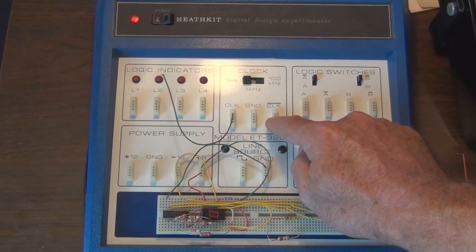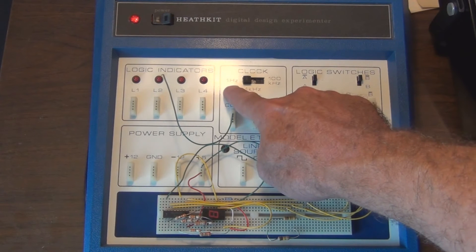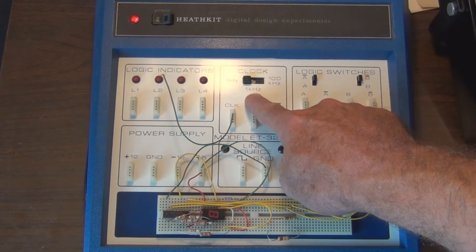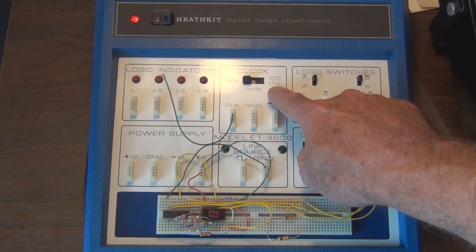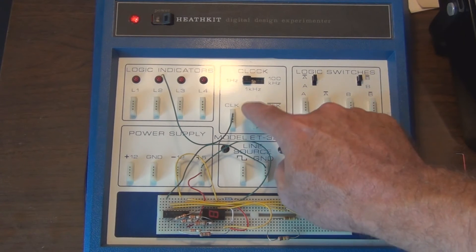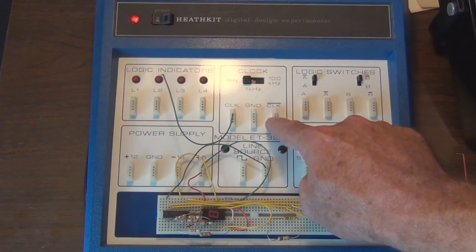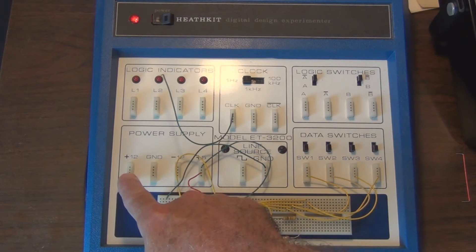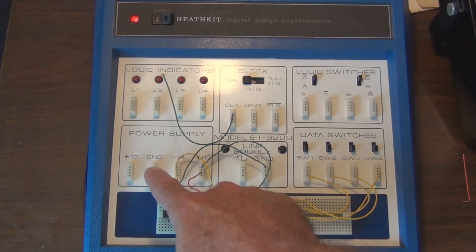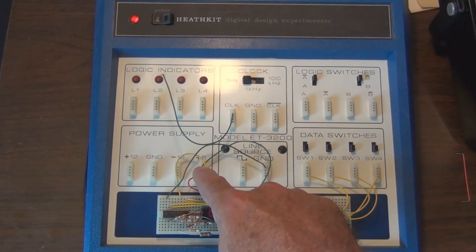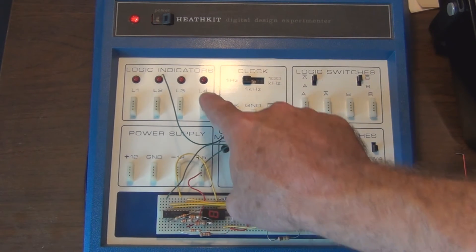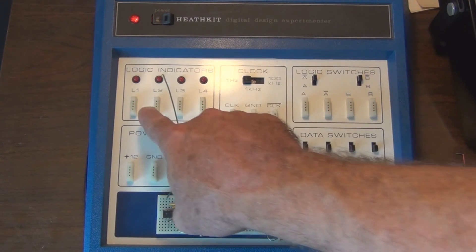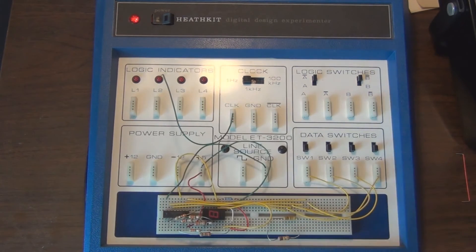You also have three clock pulses: a one Hertz, a one kilohertz, and a 100 kilohertz clock. You've got clock and clock-not, and you have plus and minus 12 volt supply, a ground, plus 5 volt supply, and four LEDs and a breadboard.